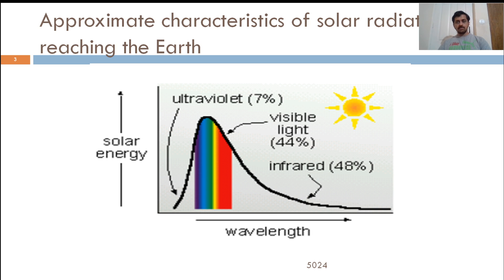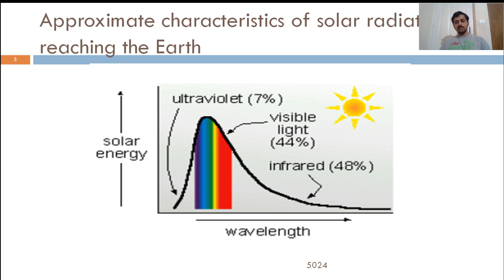This is the characteristic of solar radiation reaching the Earth, spanning from ultraviolet to infrared. The visible portion contributes 44%, UV is only 7%, and infrared accounts for 48%, covering a large range of radiation. Even though infrared radiation constitutes 48% of incoming radiation, it will be absorbed and re-radiated by the Earth's surface, and whether it is retained in the atmosphere will be decided by the greenhouse gases.